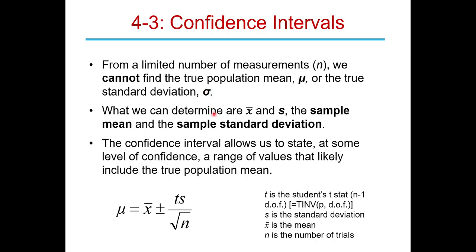What we can do is calculate a sample mean by averaging our trials, and a sample standard deviation s using the standard deviation formula. These are estimates for the true value and the true standard deviation — they may be off a little bit, but they're our best estimates. The confidence interval lets us state a range of values likely to include the true population mean.